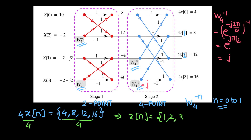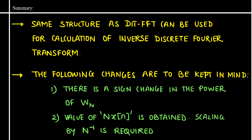We have obtained N times x of n as the sequence {4, 8, 12, 16}. Scaling by 1/N = 1/4, we get x of n as {1, 2, 3, 4} — which is correct. We can therefore use a structure identical to DIT FFT to compute the inverse discrete Fourier transform. The key changes are: a sign change in the power of the twiddle factor W_N, and dividing the output by N (or scaling by N to the power minus 1) to recover x of n.